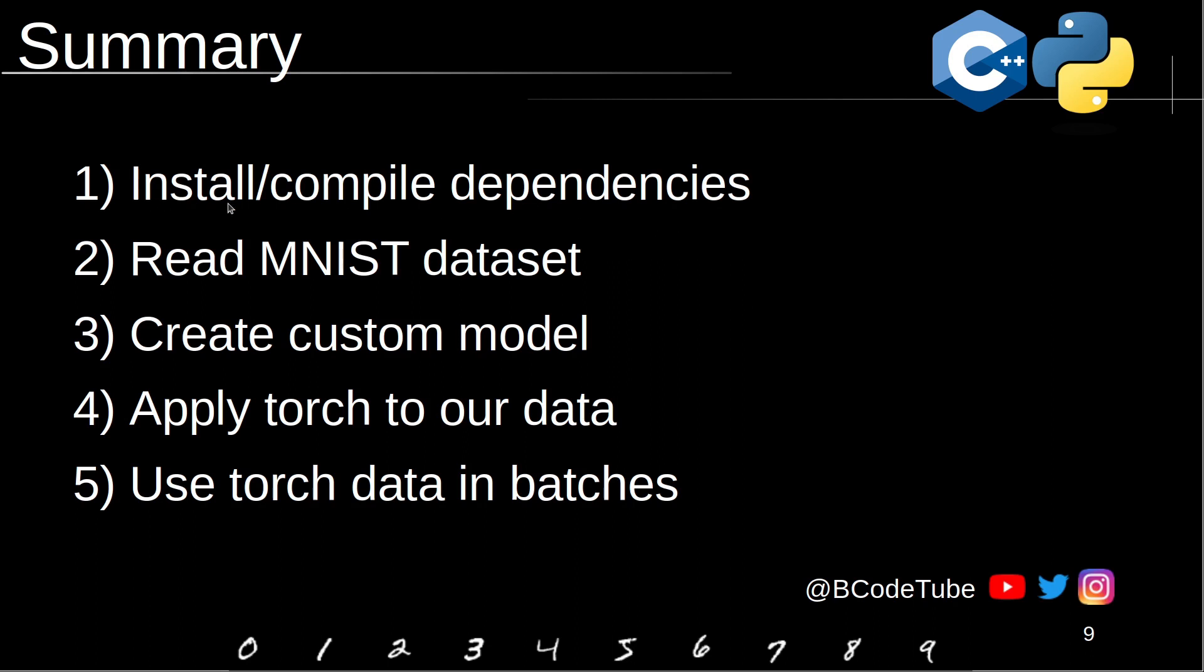So in this project, we are going to see how to install and compile the dependencies. Then we are going to read the MNIST dataset from binary sources. Then we are going to create our custom model based on Samson's video. Then we are going to apply Torch to our script. And then we are going to convert the Torch script into batches to speed up the process.